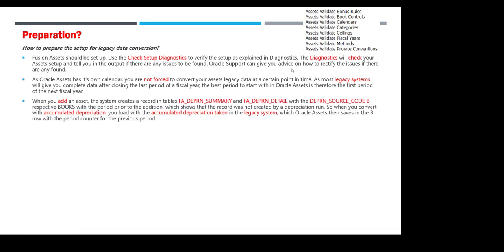When you add assets, the system calculates and records in FA_DEPRECIATION_SUMMARY and FA_DEPRECIATION_DETAILS, with the depreciation source code showing the record was not created by a depreciation run. When converting with accumulated depreciation, you load the accumulated depreciation taken in the legacy systems. If you decide to upload with accumulated depreciation, you take all this information from your legacy system and put it into the Oracle Cloud template. These tables are a reference for the technical team to check depreciation summary and details.